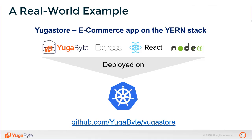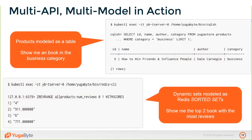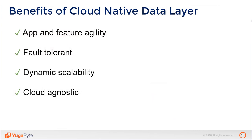Quick recap: we stored less-dynamic data using the Cassandra API and more-dynamic data using the Redis API, but we used them as APIs backed by fully functional replicated tables. We didn't have to worry about piecing together two databases, figuring out cache invalidation, populating the cache when the database changes, keeping data safe, or handling inconsistency when a node dies and some reviews didn't get replicated but core data did.